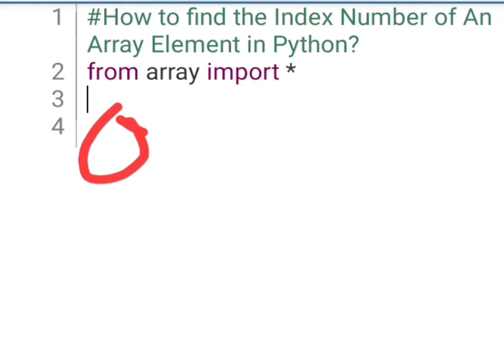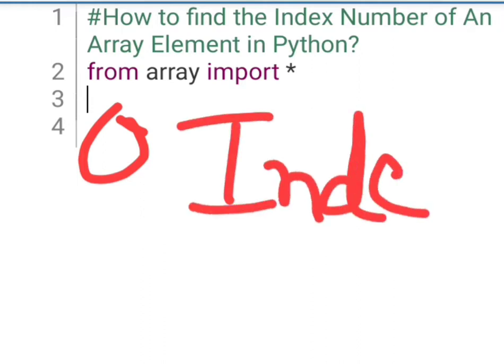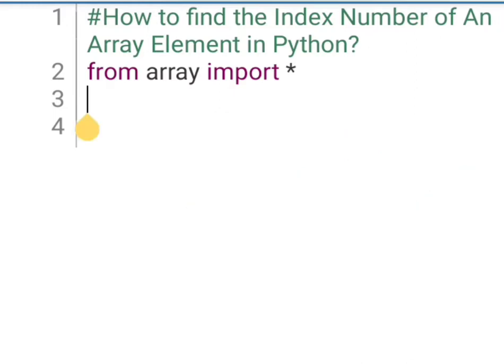But if you don't know the array element number, which index number it is, what can you do? Today's program can help you know the array element's index number. So first, we can import. We write it: from array import star.